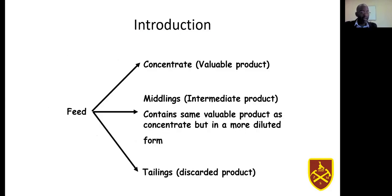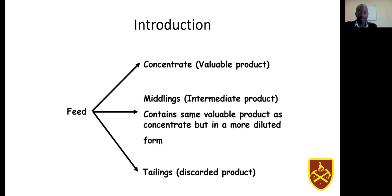When you have your feed material — which is the ore containing the target mineral — you need to remove the wanted mineral from the unwanted. You can form a number of products, usually two or more. Firstly, you can have a concentrate, which contains your valuable minerals concentrated, and that's your valuable product — what you want to produce in mineral processing. The unwanted minerals are supposed to be rejected and report to a stream called the tailings stream, which is discarded.